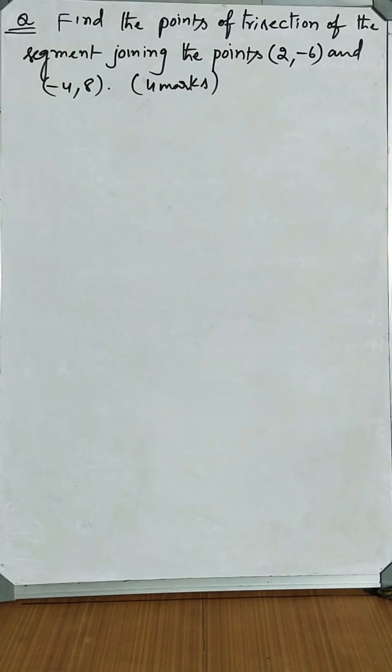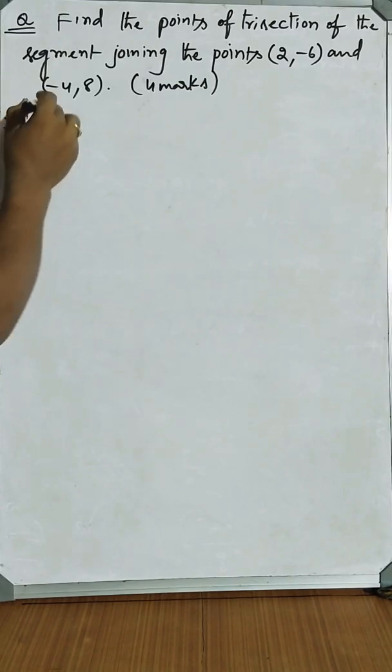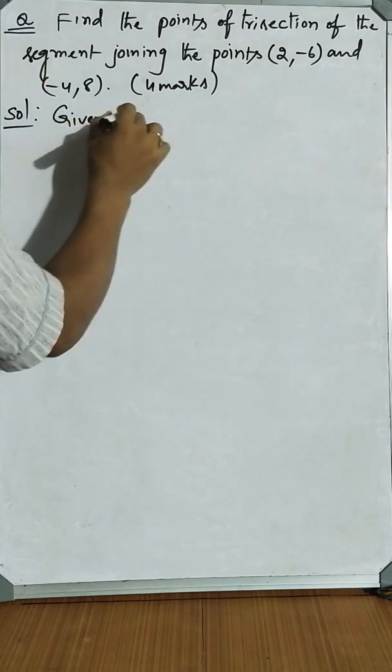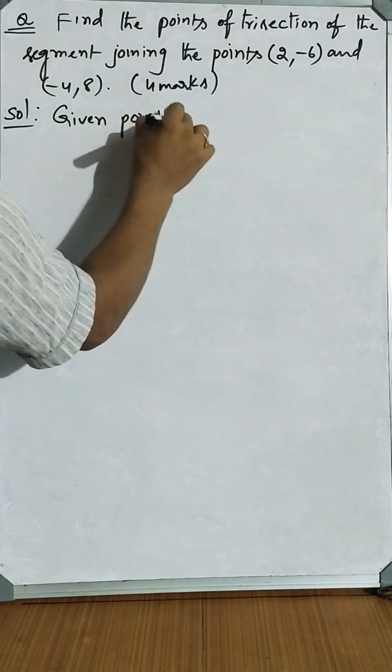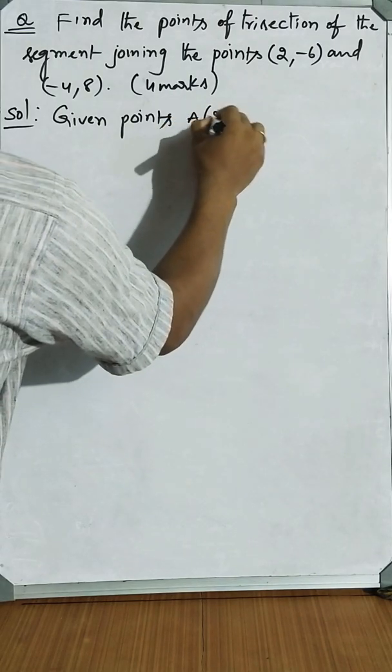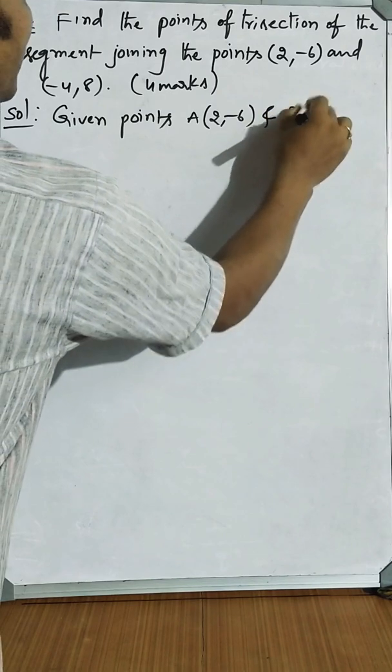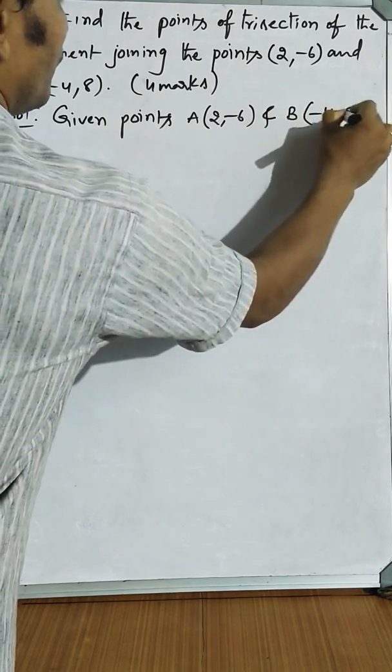Let us go to the solution. Given points are: let the first point as A(2, -6) and second point as B(-4, 8).